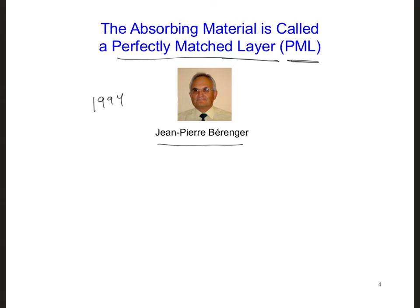This PML that Dr. Berenger developed was a game changer for computational electromagnetics. Before he introduced PML, people were using what are called radiation boundary conditions, or ABC for short, where they would just try to estimate the fields along the outside by using neighboring values on the inside of the grid. Back in 1994, for general two- and three-dimensional simulations, the reflections from the edges of the grids using RBCs were only down by a factor of about a hundred.